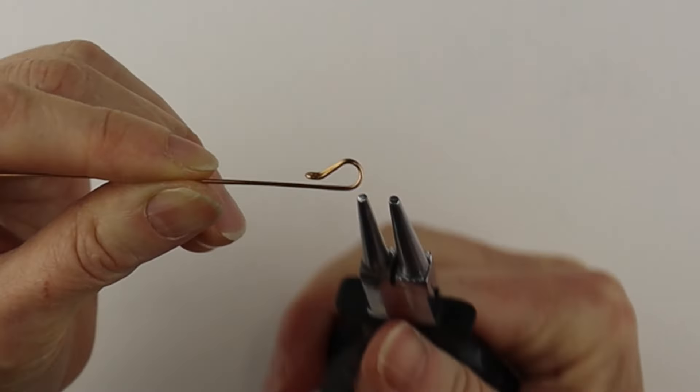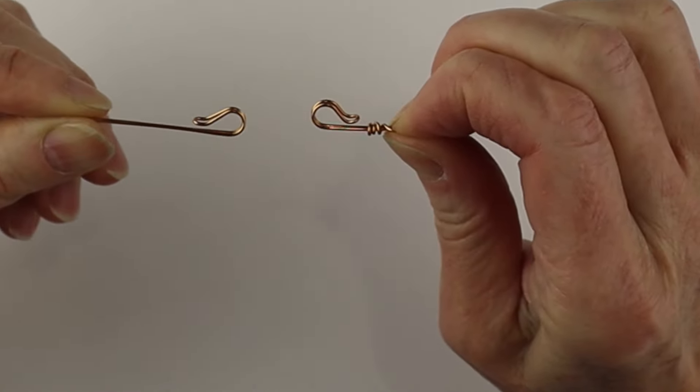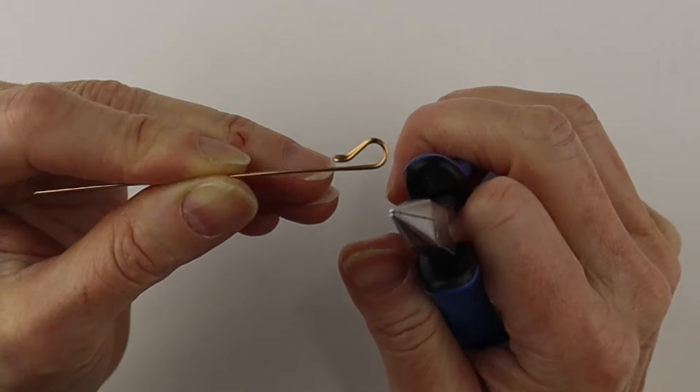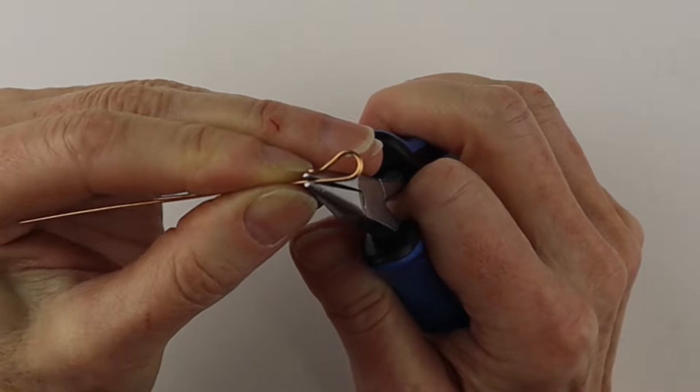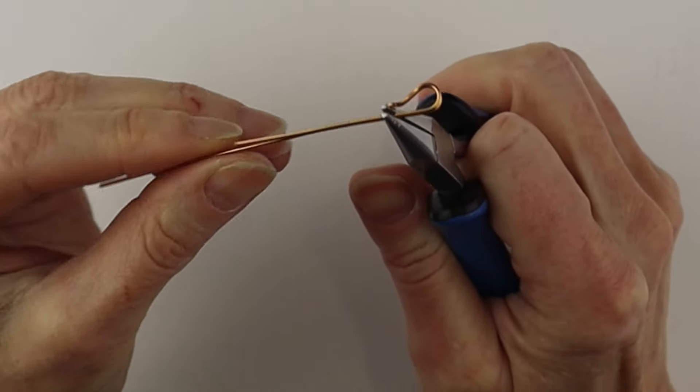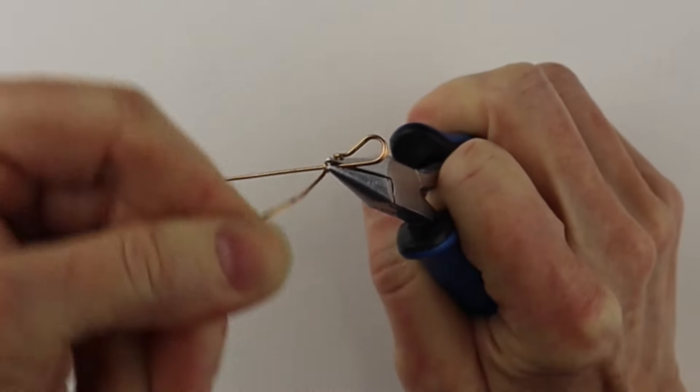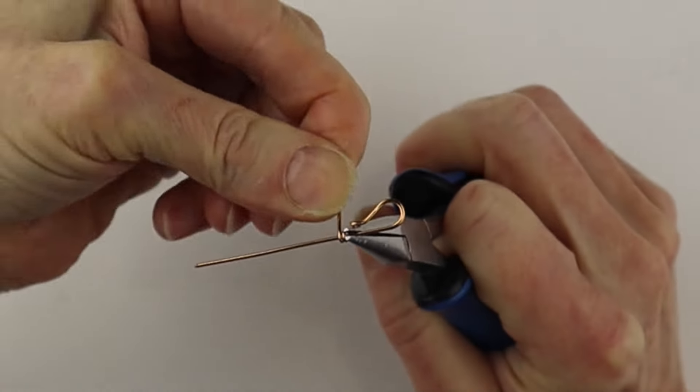If you're doing a simple clasp, you can just end it there and do a loop. So I'll just hold it with my flat pliers around here, hold it snugly, and bend this around a full turn, and then up.